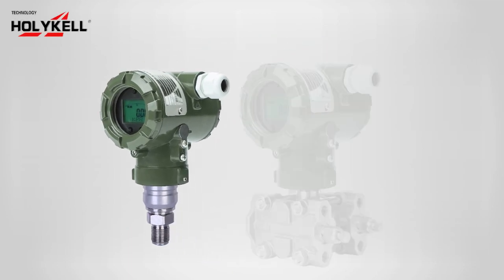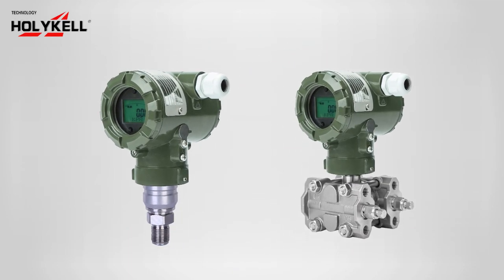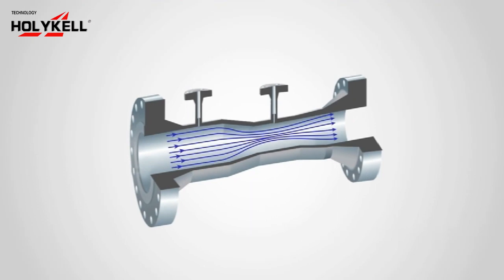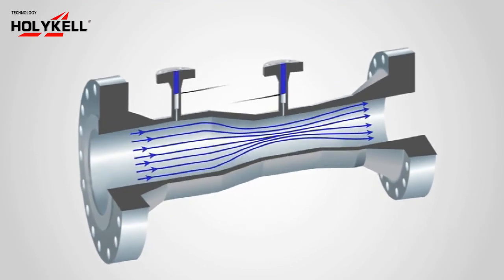Differential pressure transmitters, often called DP transmitters, are devices used to measure the difference in pressure between two points in a fluid or gas system.